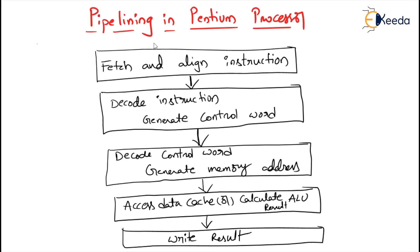These are the steps in the integer pipeline. First is fetch and align the instruction. Second is decode instruction and generate control word. Third is decode the control word and generate the memory address. Fourth is access the data cache. And the next stage is calculate the ALU result and write the result.